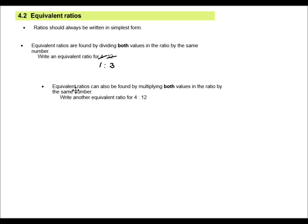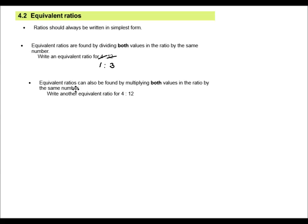Sometimes you need to change the ratios by multiplying both sides in the ratio. So write another equivalent ratio for four twelfths. So if I say four multiplied by three, then I must go twelve multiplied by three. So four threes are twelve, is 236.